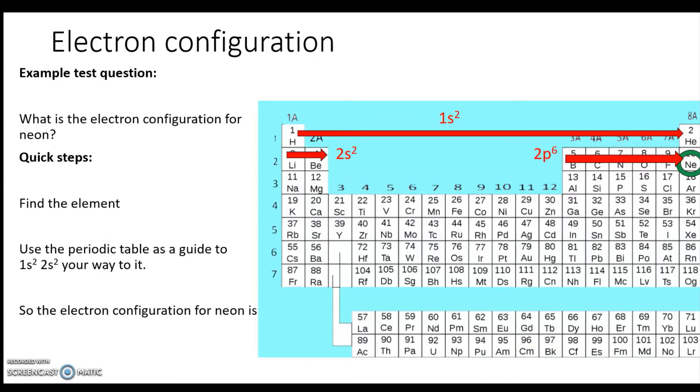So the electron configuration for neon is 1s² 2s² 2p⁶. And of course, since 1s² is the electron configuration of helium, we could also say [He] 2s² 2p⁶, although honestly that's not much of a shortcut.